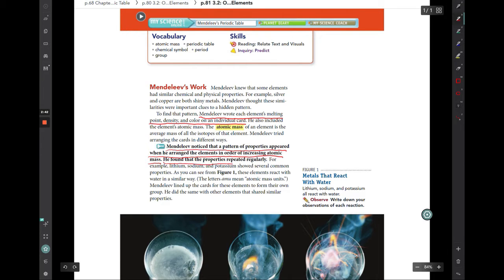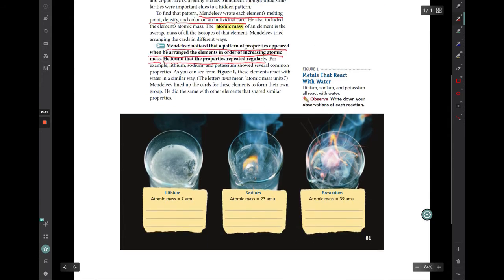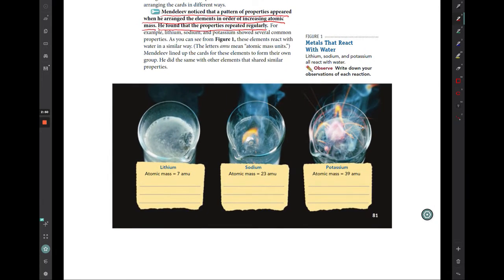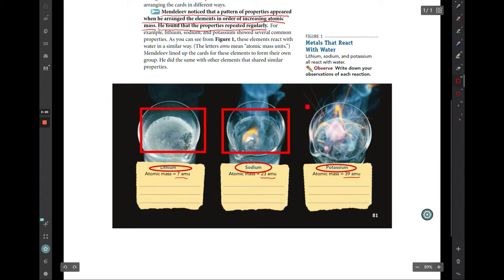And what he found is our key sentence, that he noticed that a pattern of properties appeared when he arranged the elements in order of increasing atomic mass. And he found that those properties repeated in regular patterns. We can kind of see that here in this picture. We are looking at lithium, sodium, and potassium. Notice what happens to their atomic mass numbers.